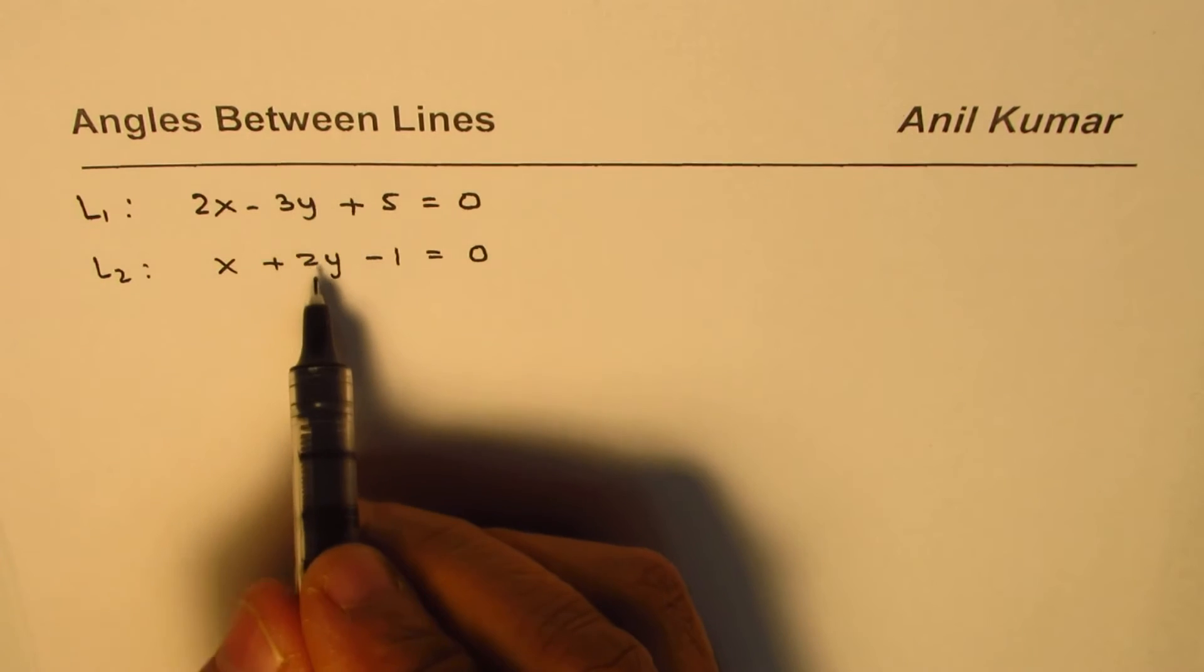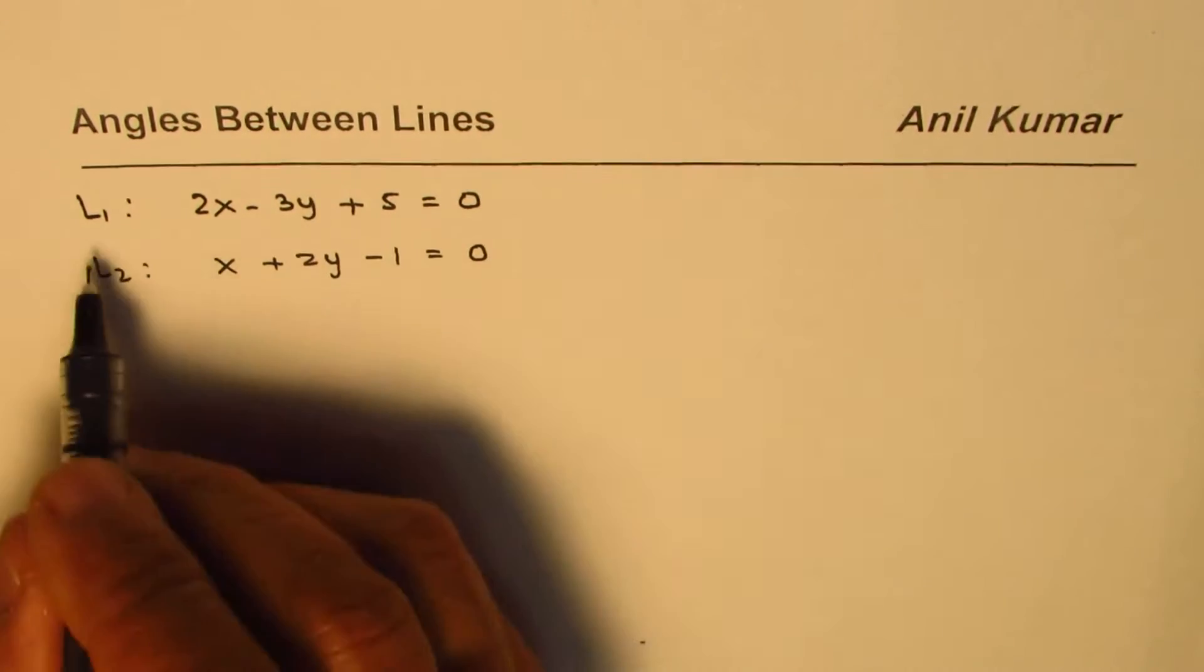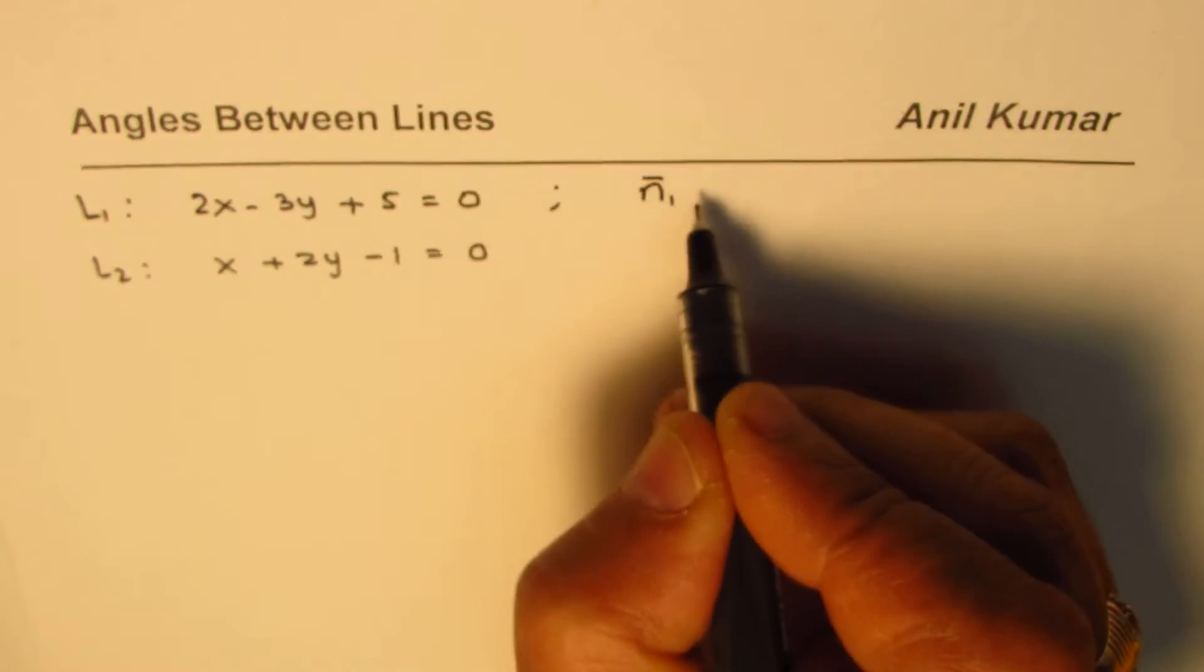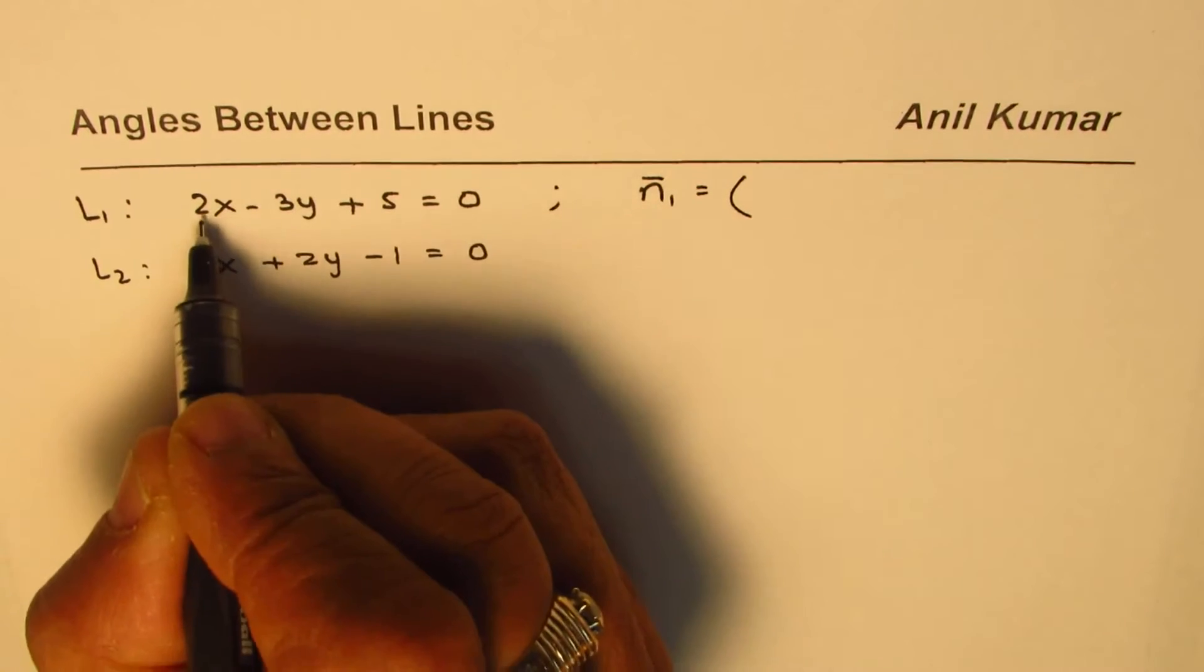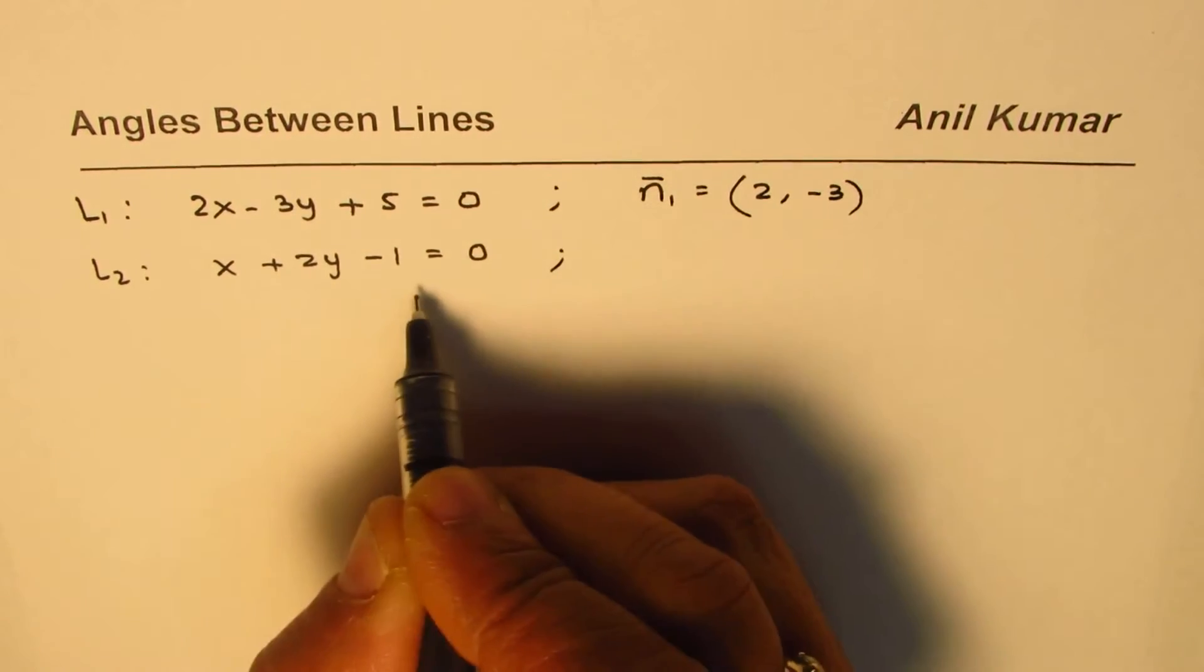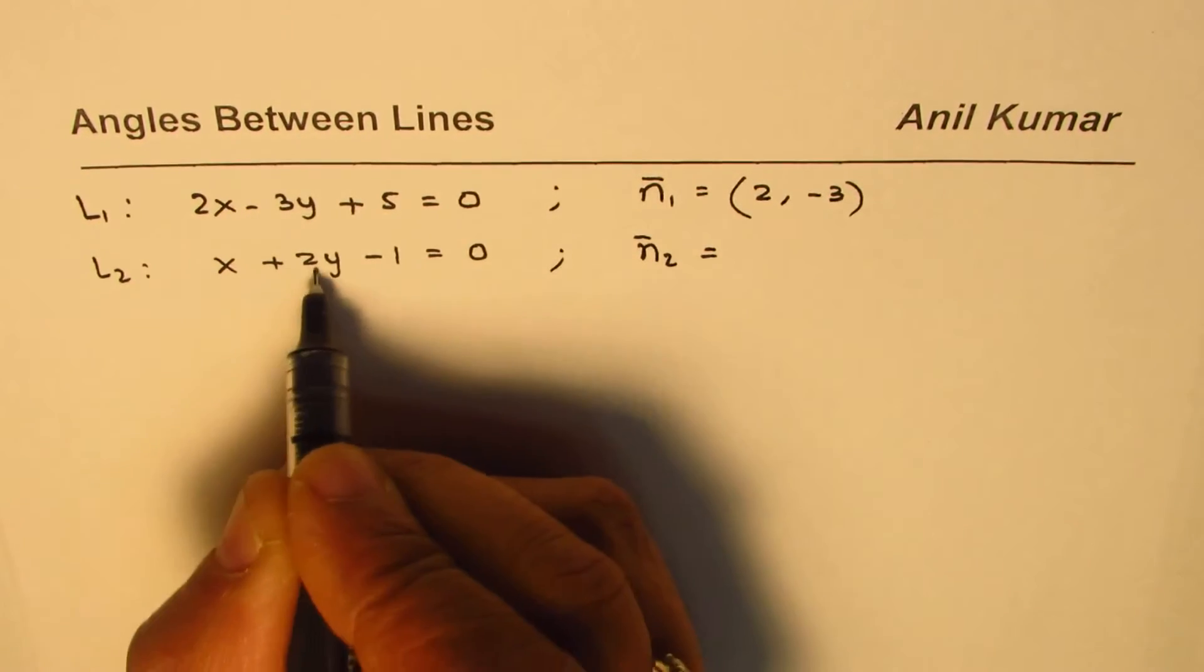Now since they are given in scalar form we know 2 and minus 3 represents their normals. So for line 1 we have normal vector which is equal to 2, minus 3. And for the second line the normal vector is 1, 2.